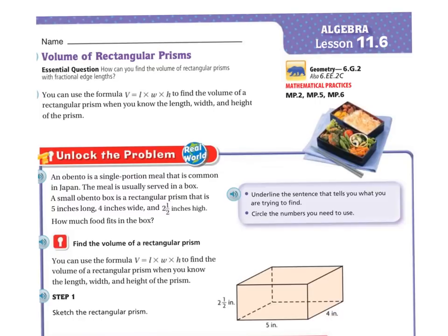Let's unlock the problem. A bento is a single portion meal that is common in Japan. The meal is usually served in a box. A small bento box is a rectangular prism that is 5 inches long, 4 inches wide, and 2.5 inches high. How much food will fit in the box?